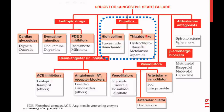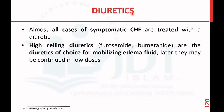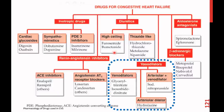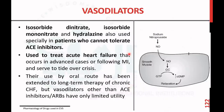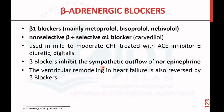Coming to diuretics: high-ceiling as well as thiazide-like diuretics are used for the treatment of congestive heart failure. These diuretics are the drugs of choice for mobilizing edema fluid. Coming to vasodilators: sodium nitroprusside and hydralazine are used. Venodilators like glyceryl trinitrate and antianginal drugs such as isosorbide dinitrate and isosorbide mononitrate are used in patients who cannot tolerate ACE inhibitors. They act by releasing nitric oxide, which converts GTP to cyclic GMP, producing vasodilation.